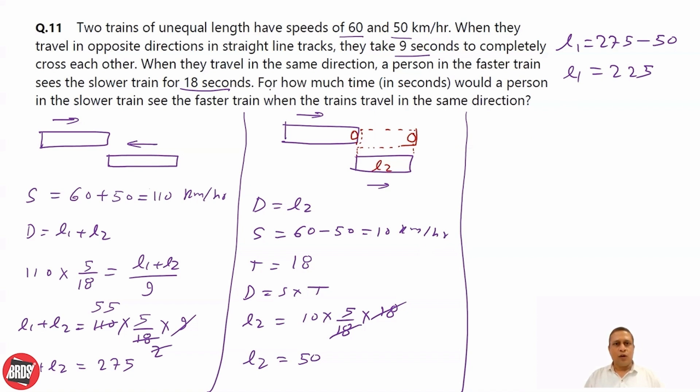Now, what they are asking? For how much time would a person in slower train see the person in faster train? In this case, the distance will be length of the faster train. Time we want to find and speed will be 10 km per hour. Because both are moving in the same direction, time equals distance upon speed. Distance is 225. Speed is 10. You multiply 5 by 18 to convert into meter per second.